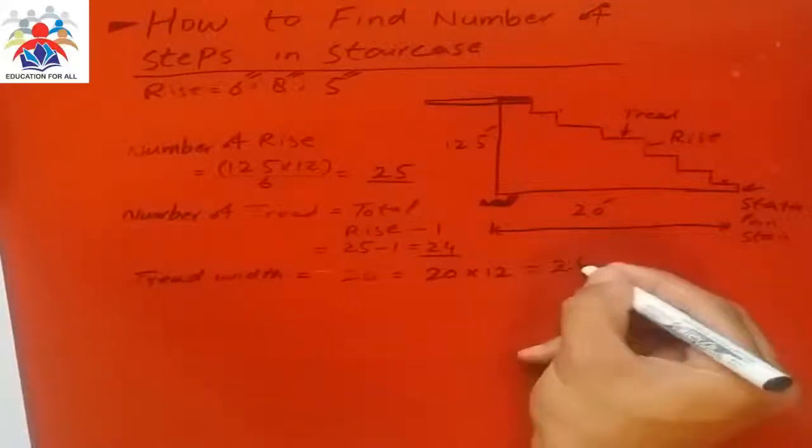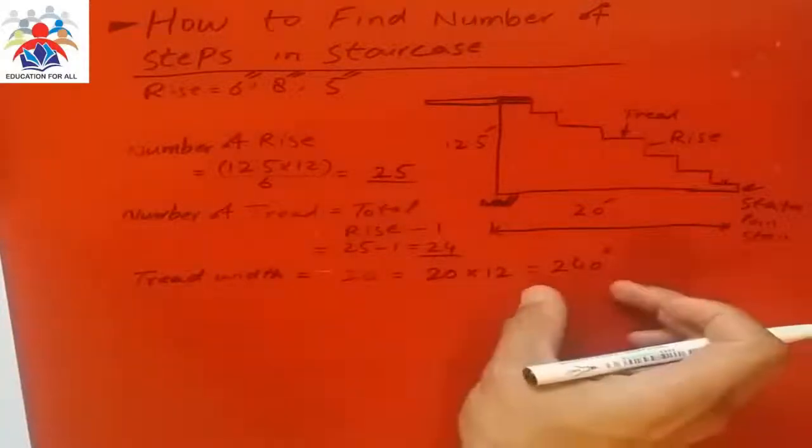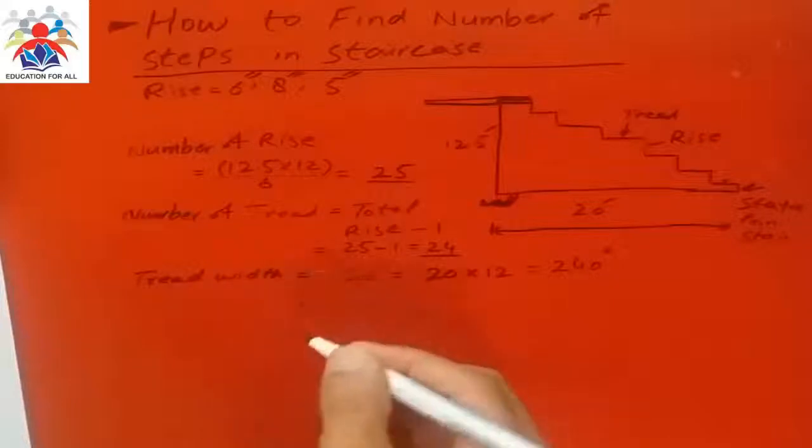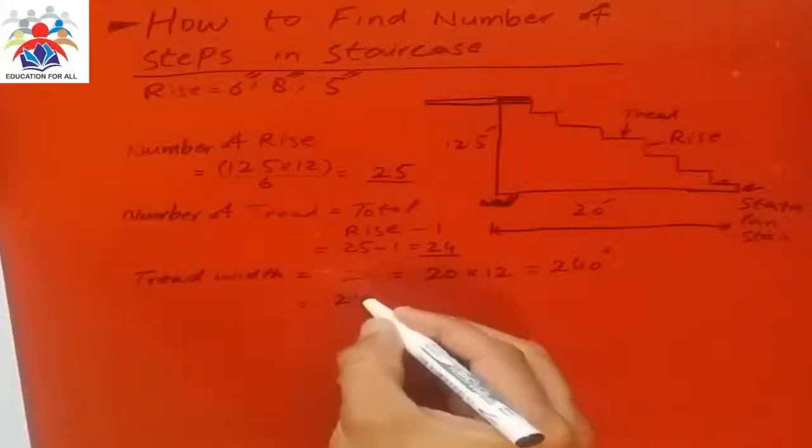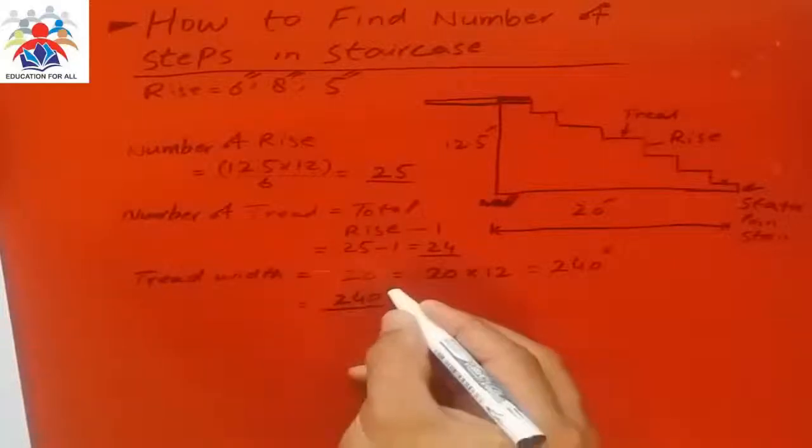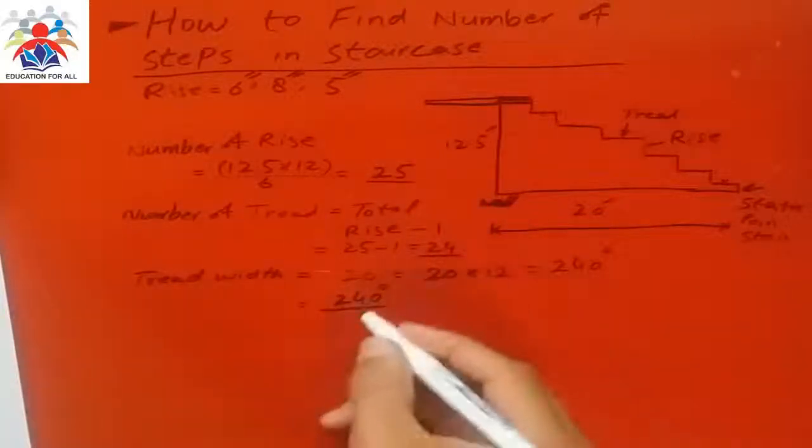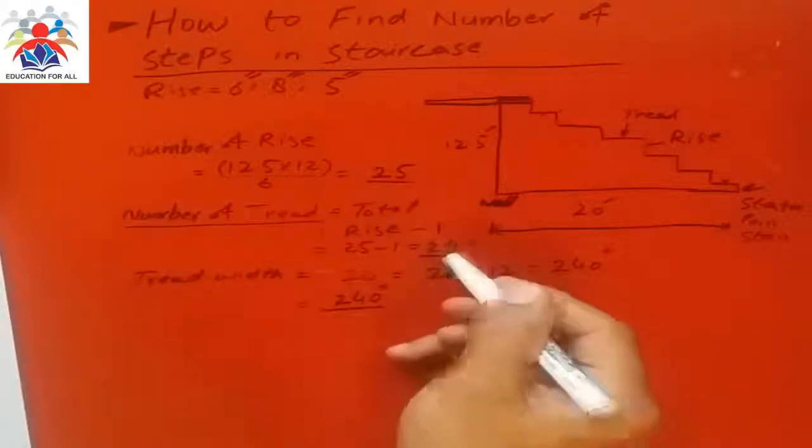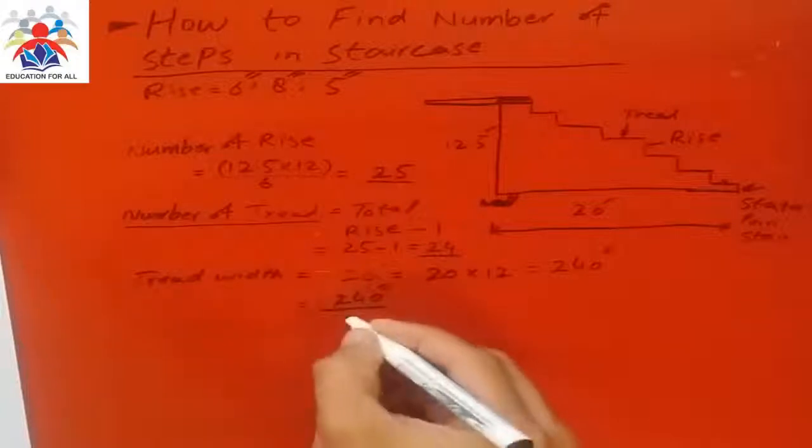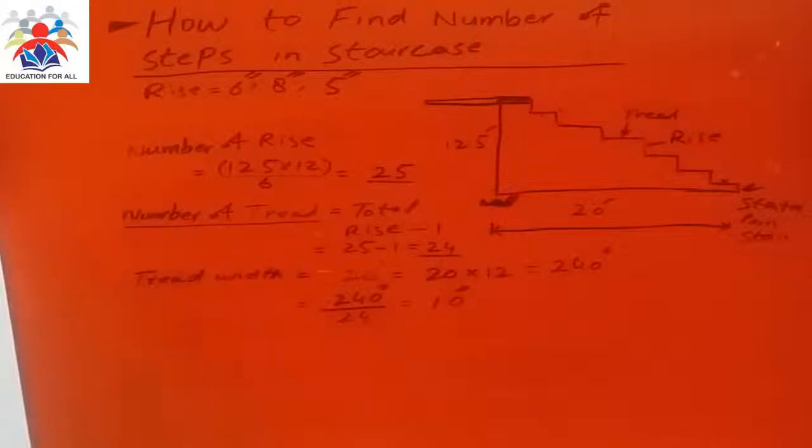So you have 240 inches. The width of each tread is going to be 240 inches divided by 24, because you can see the number of treads. We have to take this value rather than the top one. So we divide by 24, and you will get 10 inches.